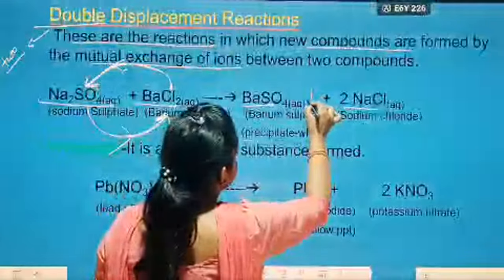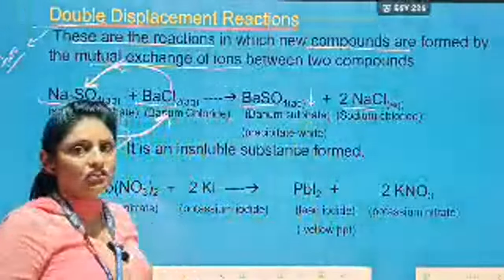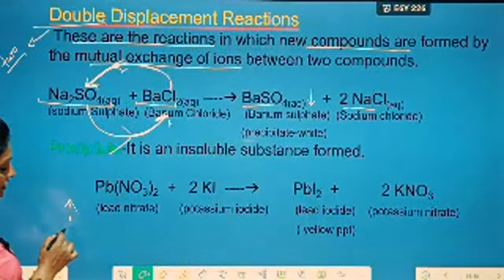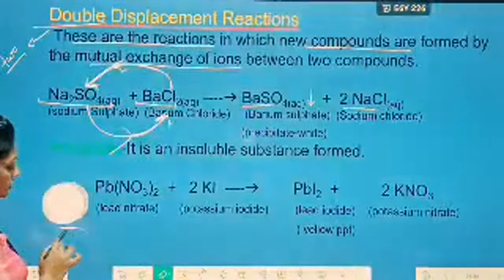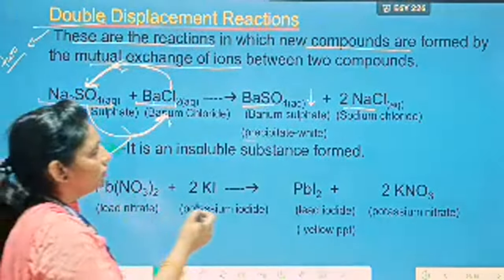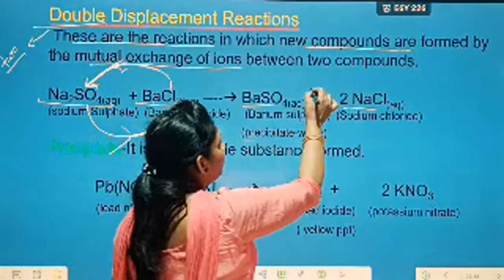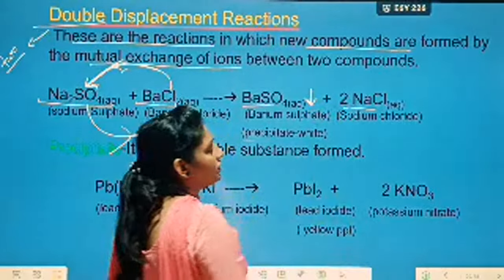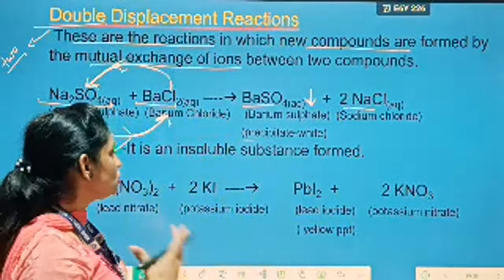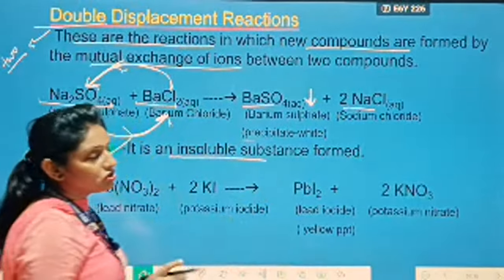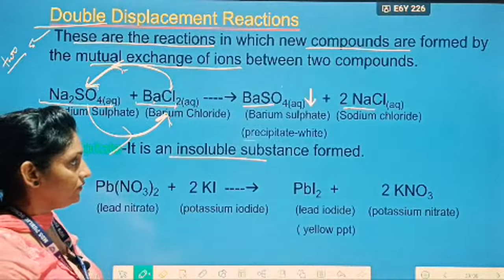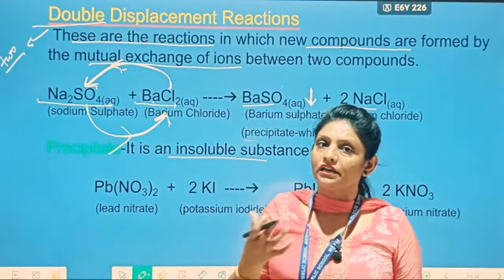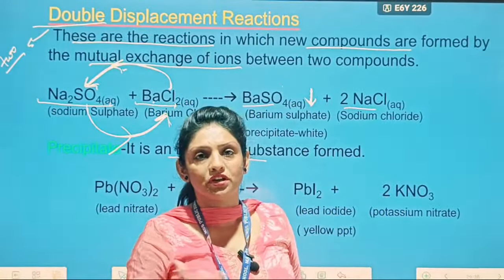Here you get a precipitate. You can show a precipitate in this way. If gas is evolved in any reaction, you can show it with an upward arrow, meaning gas is evolving. But for precipitate formation, you show it with a downward arrow. Precipitate means an insoluble substance formed during the chemical reaction. The reaction in which some insoluble substance remains in the reaction mixture is also known as a precipitation reaction.